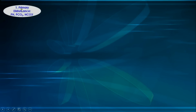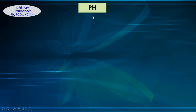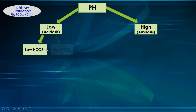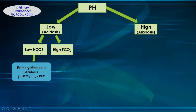The first step is to identify the primary disturbance by looking at the pH, pCO2, and bicarbonate level. The pH could be either low — meaning acidosis — or high — meaning alkalosis. For acidosis, we look at the other two parameters: pCO2 and bicarbonate. A low bicarbonate indicates primary metabolic acidosis, and a high pCO2 — meaning hypoventilation — indicates primary respiratory acidosis.